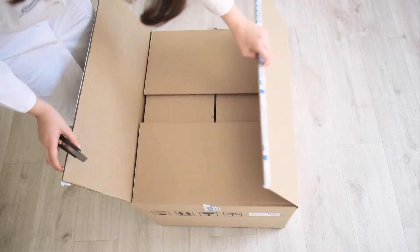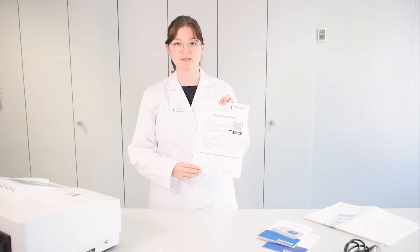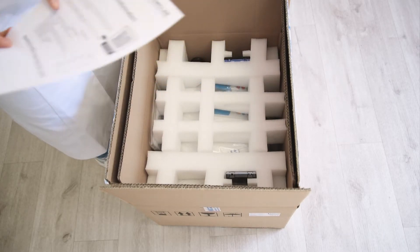First of all we have this checklist where you can tick off all the things that should be included in the package, and printed on this list is a QR code with which you can download the PC software and also the operating instructions.